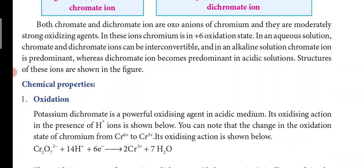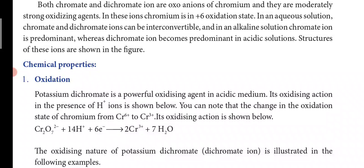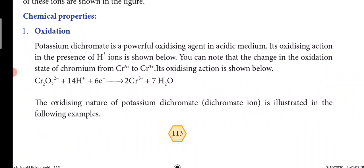In aqueous solution, chromate and dichromate ions are interconvertible. In alkaline solution, chromate ion is predominant, whereas dichromate ion becomes predominant in acidic solution. Regarding chemical properties, potassium dichromate is a powerful oxidizing agent in acidic medium, with oxidizing property in the presence of H⁺ ions. The oxidation state of chromium changes from Cr⁶⁺ to Cr³⁺.